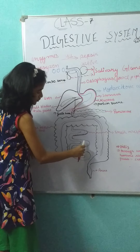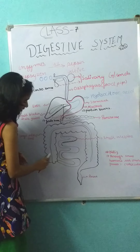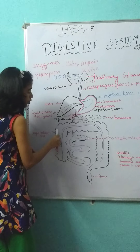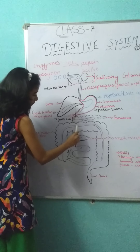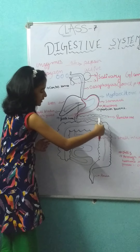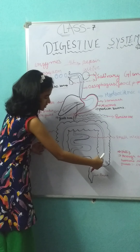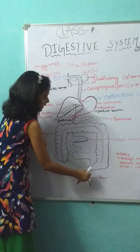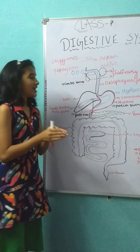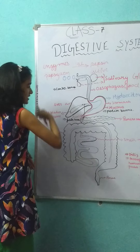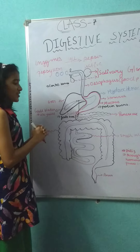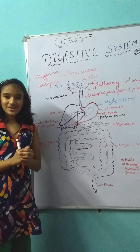The undigested food transfers to the large intestine, where water is absorbed. Then the undigested food comes out with the help of the anus. Did you understand the digestive system? If you did, please like my video. Thank you.